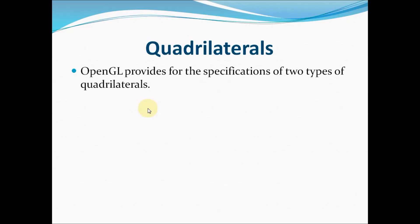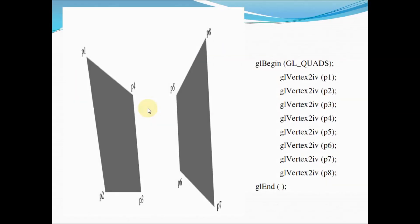Using quadrilaterals I can create two different types of fill areas. The first is GL_QUADS: I use eight vertices to generate two unconnected quads — four edges each. The first quad uses vertices p1, p2, p3, p4 and the second quad uses vertices p5, p6, p7, p8.